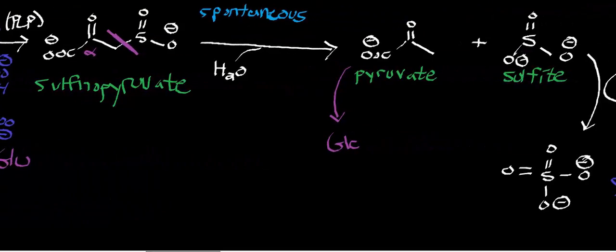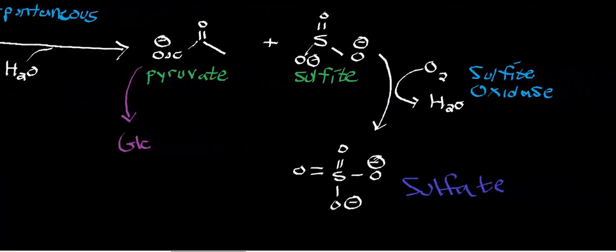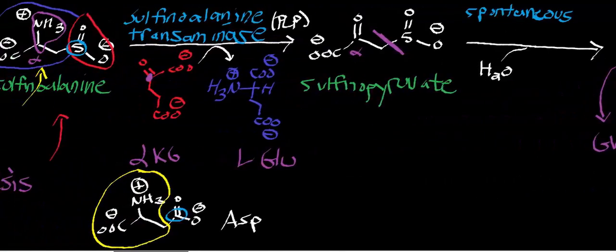So sulfenoalanine reacts with aspartate transaminase, and you get sulfenopyruvate. Sulfenopyruvate undergoes a spontaneous hydrolysis, and that line that's in purple represents the bond that's being cleaved. And we get pyruvate and sulfite. Pyruvate goes into gluconeogenesis, assuming that you're a liver hepatocyte, and the glucose gets dumped into the blood and feeds peripheral tissues. The sulfite gets oxidized by sulfite oxidase to form sulfate, which is a less toxic version of a sulfur oxygen-containing compound.